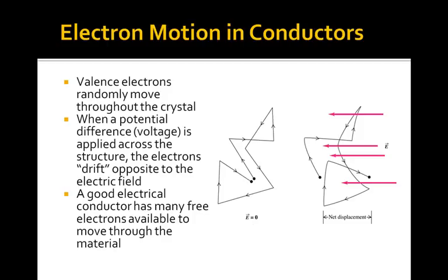This is what forms the basis of conductors: these extra free electrons are available to move around or randomly move throughout the crystal. At room temperature, these electrons are going to randomly move throughout the crystal — they just kind of bounce around.